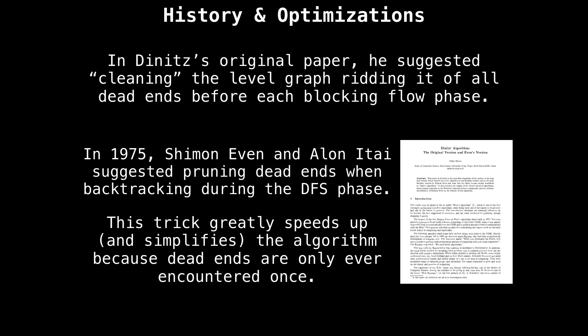To resolve this issue in his original paper Dinic suggested cleaning the level graph and getting rid of all the dead ends before each blocking flow phase. Then later in 1975, Shimon Even suggested pruning dead ends when backtracking during the depth first search phase, effectively getting rid of dead ends on the fly as the algorithm executes. This trick greatly speeds up and simplifies the algorithm because dead ends are only ever encountered once.